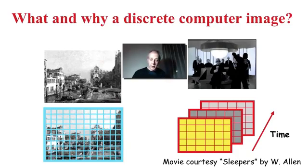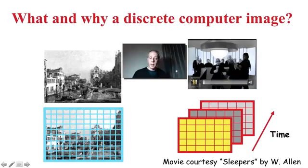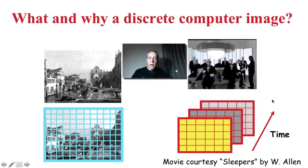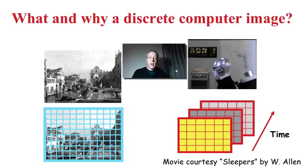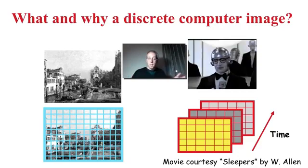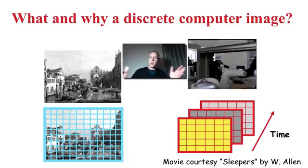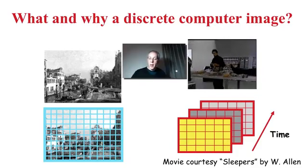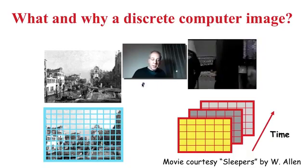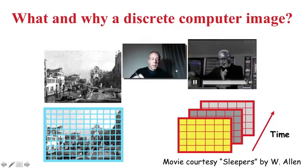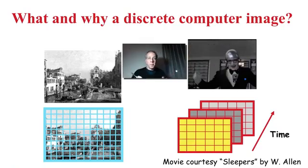The same happens with movies. We already know that movies are discrete objects. They look continuous to us — like this movie we are watching here — because the sampling in time is very fast. That's why our perception perceives this as a continuous object. But we already know this is a discrete object: 30 frames per second, 24 frames per second. So images and videos are discrete both in space, in time, and also at the gray levels — they look continuous to us, but they are discrete objects.